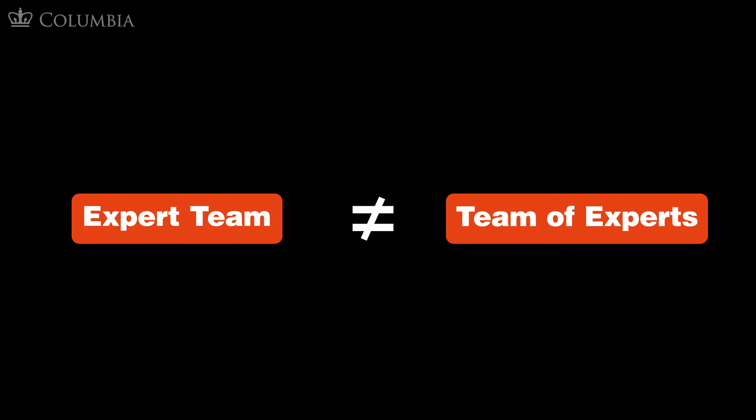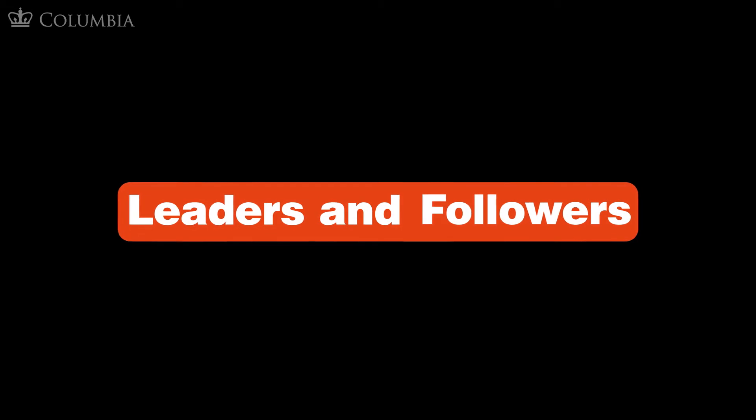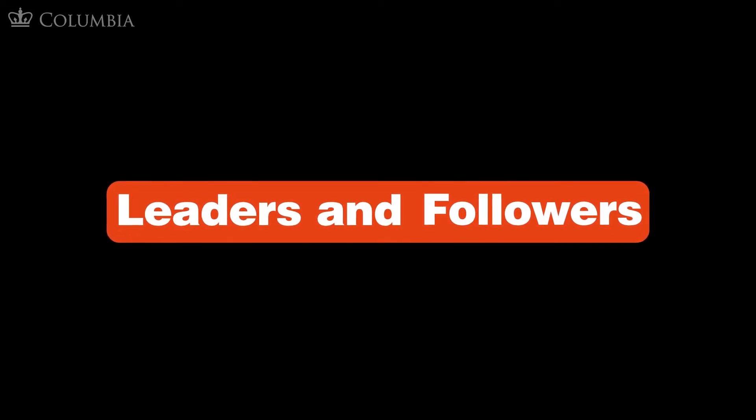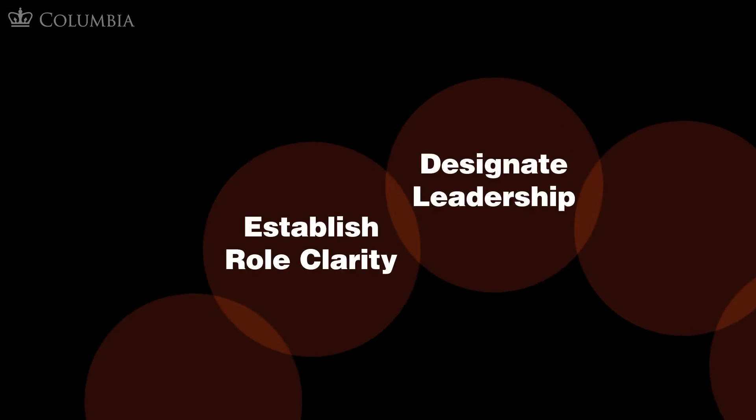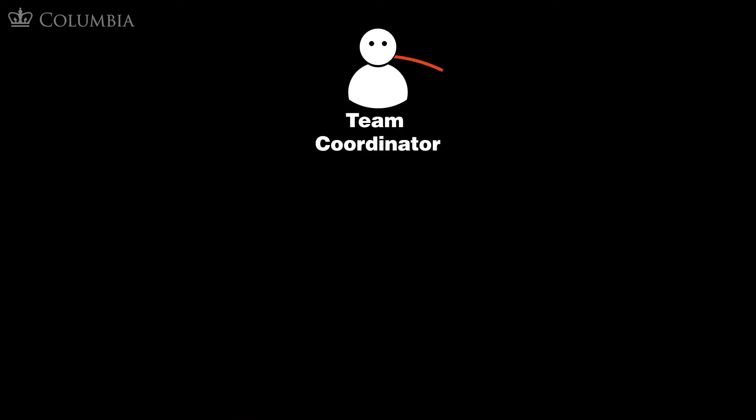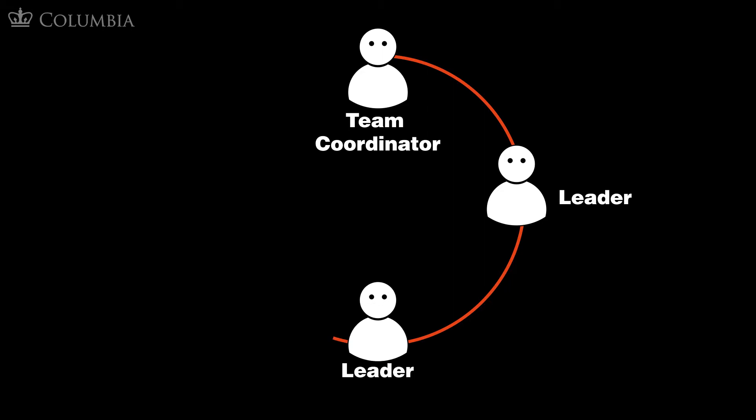It has been said that an expert team is not the same as a team of experts. The inconvenient truth is that in a crisis where people are comfortable being themselves, there are often multiple leaders. We want to challenge the conventional wisdom that focuses on leaders and followers, and shift our frame to leaders and leaders. This shift empowers every member of the team to speak up and prevents situations where classic followers wait for formal leaders to assign roles or make a decision. We'd like to replace the historical crisis resource management principle of designating leadership and establishing role clarity with identifying a team coordinator who allocates leadership roles in a team that respects the chain of command.